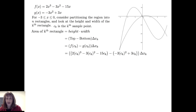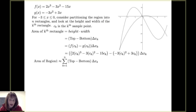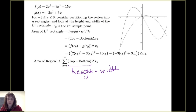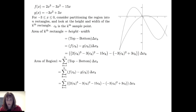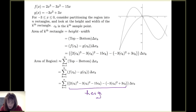That's the area of a single rectangle from the partition. To get the area of the region, I approximate by adding up the areas of the rectangles — the slices. Each rectangle has an area determined by the top minus the bottom function evaluated at a sample point, giving the height, and delta x sub k is the width. So I sum from k equals 1 to n of f evaluated at c sub k minus g evaluated at c sub k times delta x sub k. The height is the top function minus the bottom function, and delta x sub k is the width.